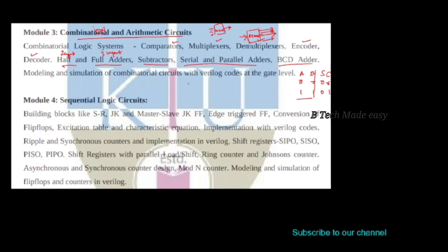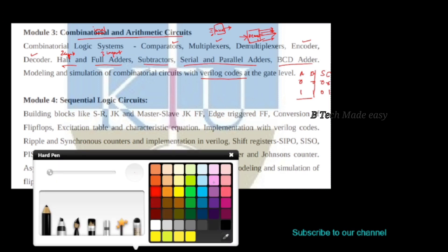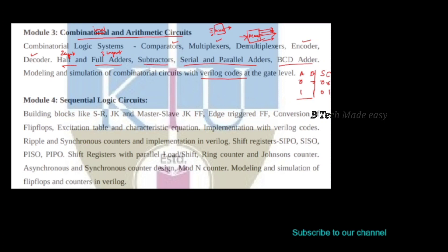We are talking about the combination of combinational circuits at the gate level and model level. This is what we are discussing in Module 3.